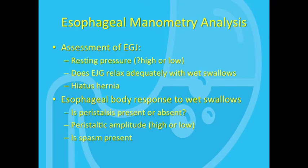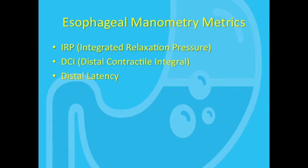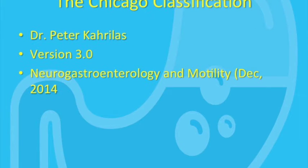Three important manometry metrics have been developed to help us characterize the behavior of the esophagus. These are the Integrated Relaxation Pressure, or IRP, which is an assessment of EGJ relaxation; the Distal Contractile Integral, or DCI, which is an assessment of overall peristaltic contraction force in the esophagus; and the distal latency, which is a measure of the presence or absence of esophageal spasm or premature contraction. Let's talk about how these three numbers fit together and help us classify esophageal motility disorders.